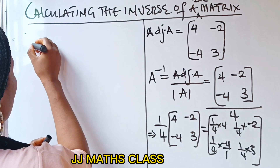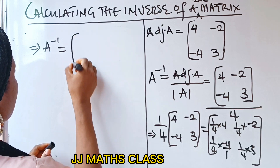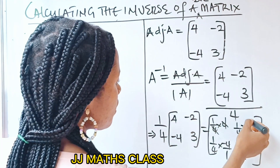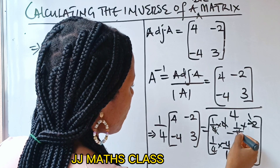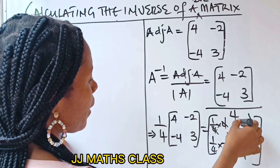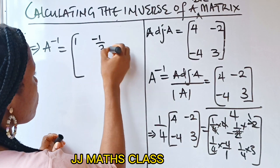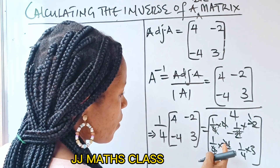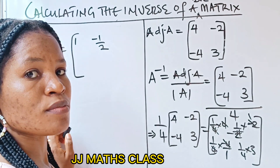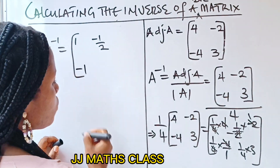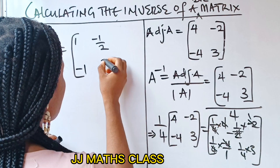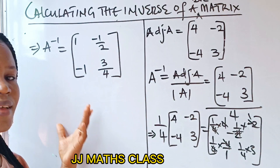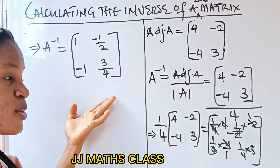Let's bring out our A inverse now. 4 divided by 4 gives 1. Minus 2 divided by 4 gives minus one-half. Then minus 4 divided by 4 — remember there is a minus — gives minus 1. And 3 divided by 4 gives 3 over 4, because 3 cannot divide 4 without remainder. So this is our A inverse: 1, minus one-half, minus 1, and three-quarters.